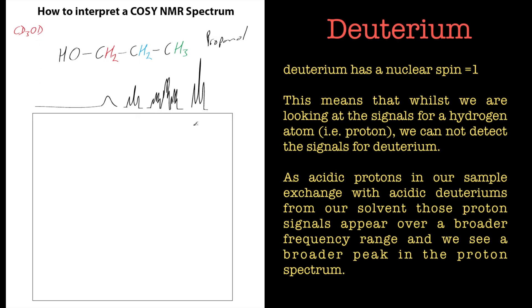We'll do splitting patterns another time, but we'll go over it basically now. The OH I've left as broad because it's exchanging — this has been dissolved in a deuterated solvent, say deuterated methanol (CD3OD). The deuterium won't show up on this 1H spectrum since we're looking at the hydrogen nucleus, not deuterium. But unfortunately the deuterium will exchange with this alcohol in solution, and because it's exchanging we don't really know where this proton is going to be — it can be on and off — so it broadens the signal. Exchange signals tend to be broad like that.